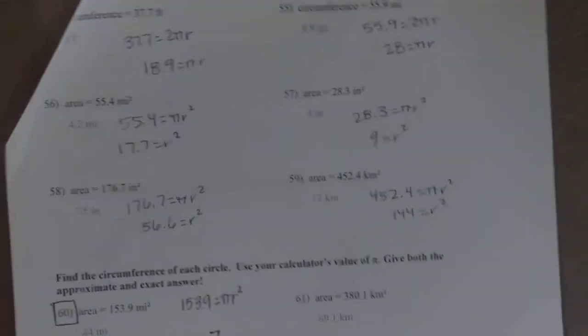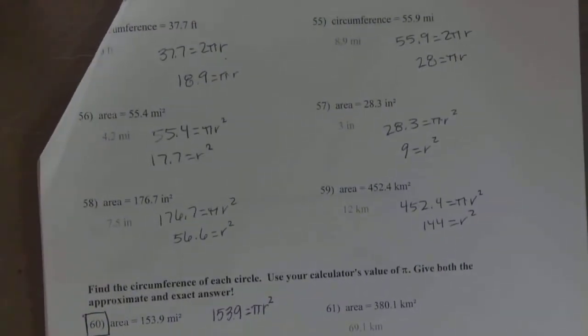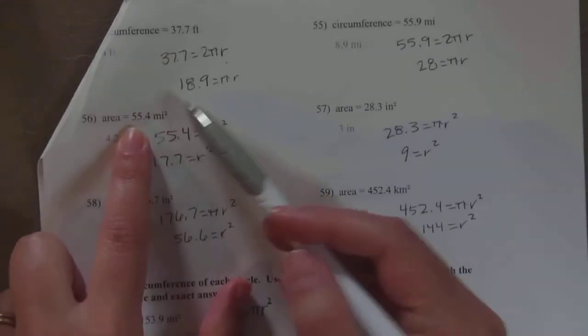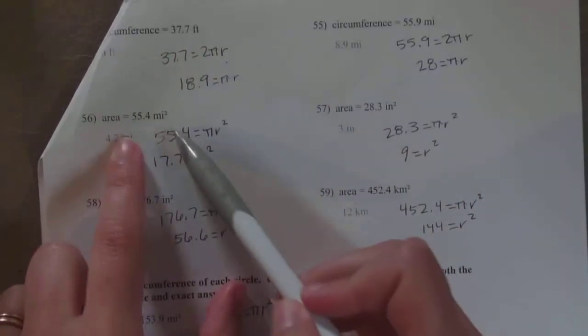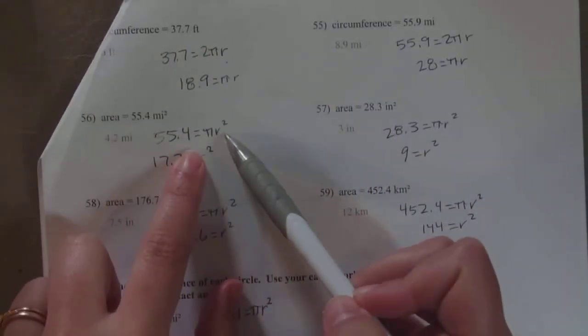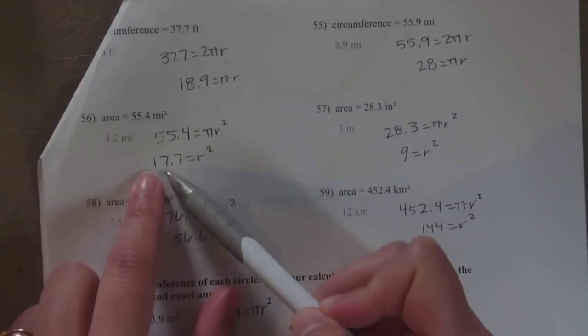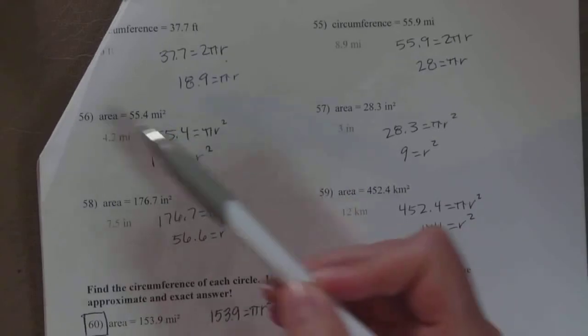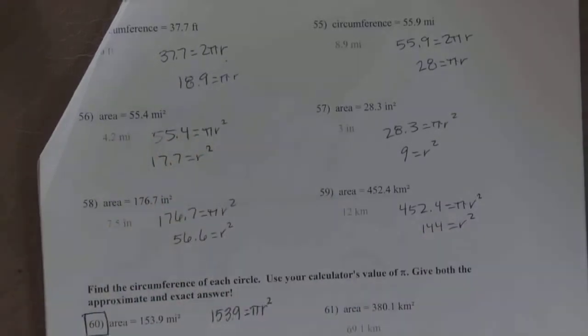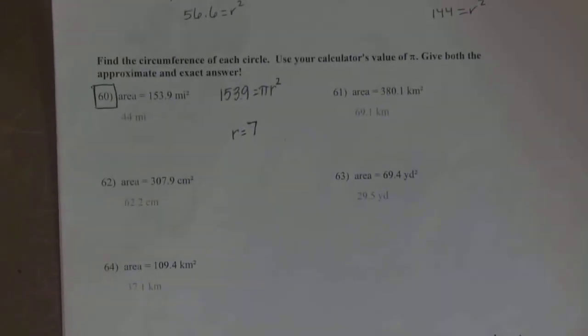That's problems 52 to 55. Then at 56, it gives you the area and asks for the radius. You just take the area, set it equal to the area formula. You'll divide by π first, which got me 17.7, and then just square root it. That will give you the radius. Not too difficult.